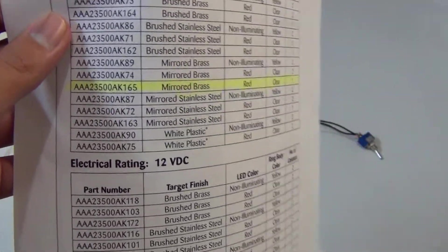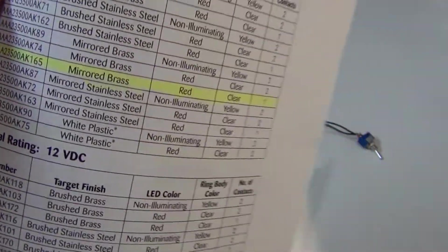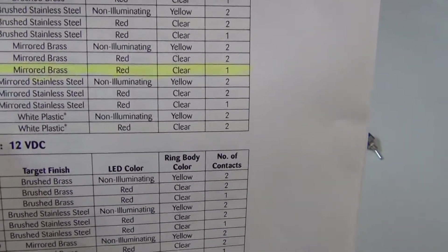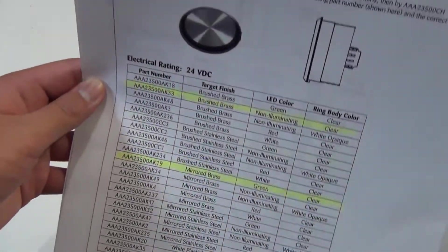Part number AAA23500AK165, mirrored brass, red LED, and then a clear ring body, 1 contact. I also got some other buttons which are off camera.